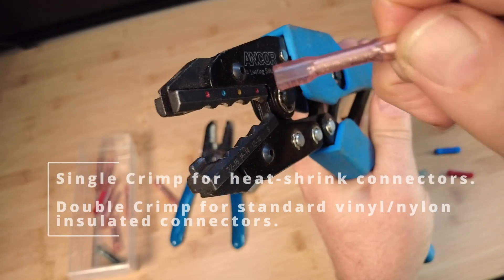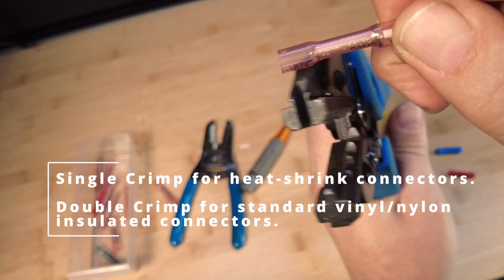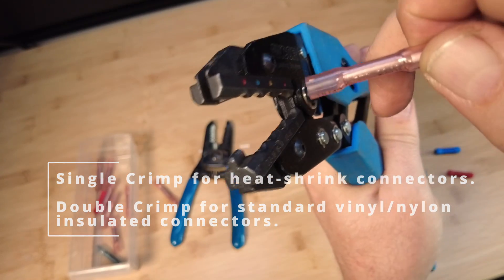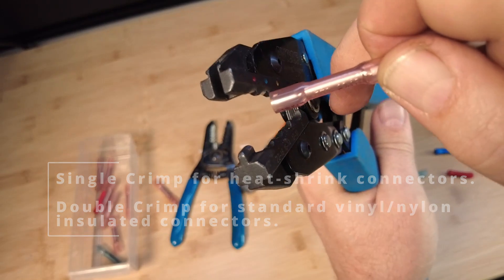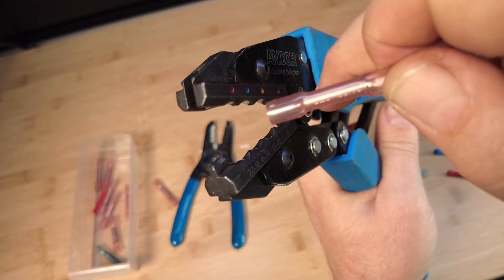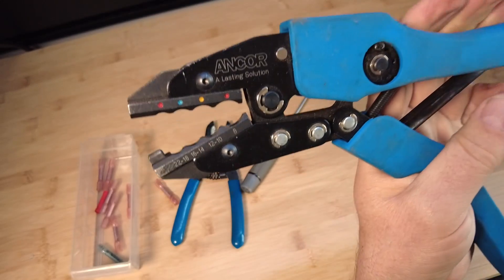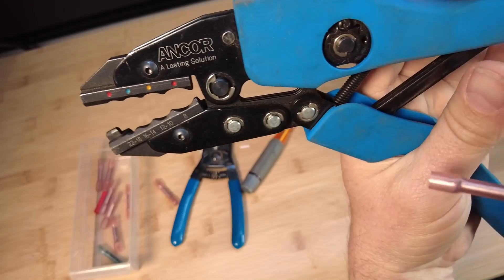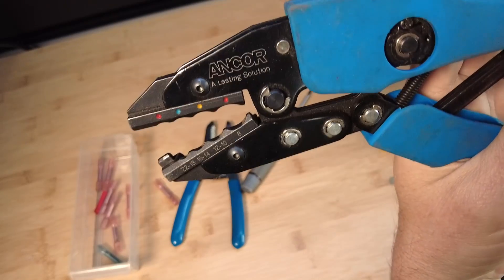You use single crimp if you're using insulated terminals like this. If this doesn't have any plastic on it for insulation, then you'd use a double, but we don't want to puncture the insulation. So we're using a single crimp version. These are ratcheting, so they have a bit of extra leverage to them. So it makes it easier to crimp it.